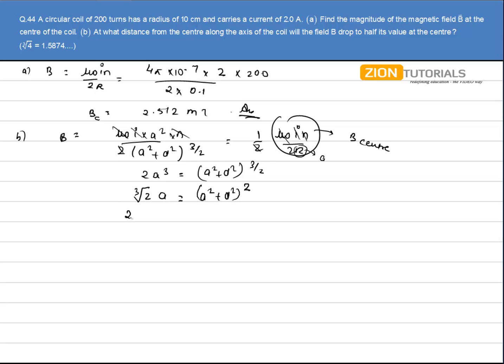squaring both sides, I have 2 to the power 2 by 3, A square is equal to A square plus D square.